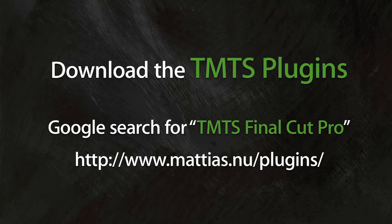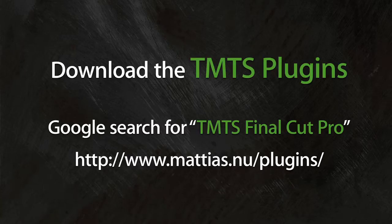What we need to do, first things first, is download the TMTS plugins for Final Cut Pro. TMTS stands for Too Much Too Soon. In order to find it, all you have to do is do a Google search for TMTS Final Cut Pro. It'll probably be the first result. If you want to be sure you're getting it from the right place, the URL is www.matthias.nu/plugins. Special thanks to him for making these freely available.